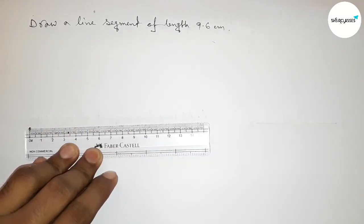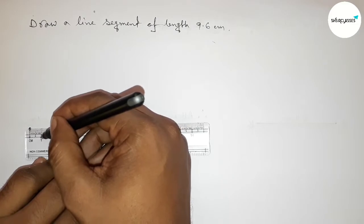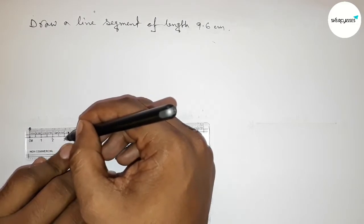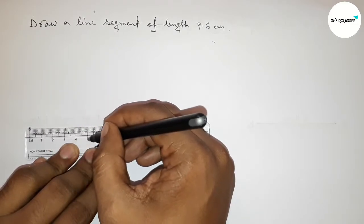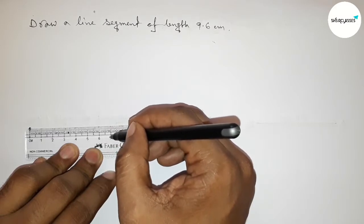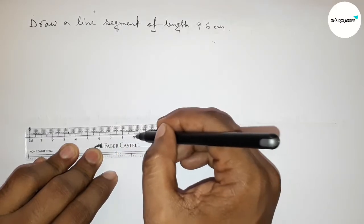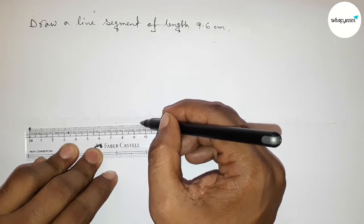Then counting: this is one, two, three, four, five, six, seven, eight, nine - this is nine point five.